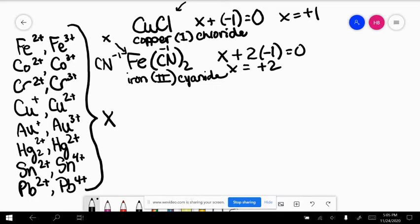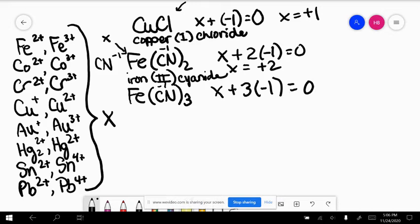Now let's compare that to the other possibility, which would be iron three cyanide. Like such, cyanide is still a minus one. I have one iron and three cyanides. In this case, x is equal to plus three. So this is iron three cyanide. Here's my two possibilities for an iron compound with a cyanide polyatomic ion.